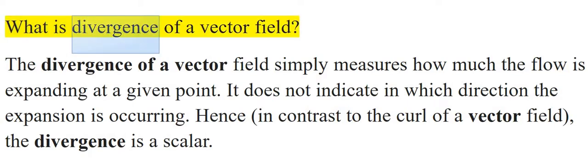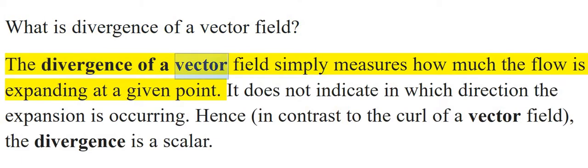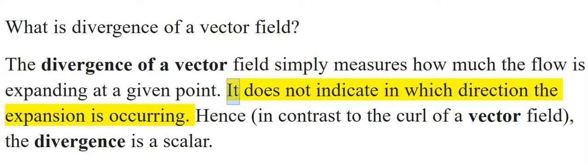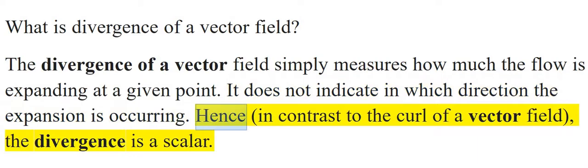What is divergence of a vector field? The divergence of a vector field simply measures how much the flow is expanding at a given point. It does not indicate in which direction the expansion is occurring. Hence, in contrast to the curl of a vector field, the divergence is a scalar.